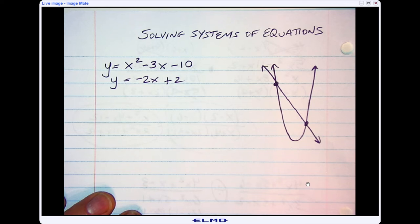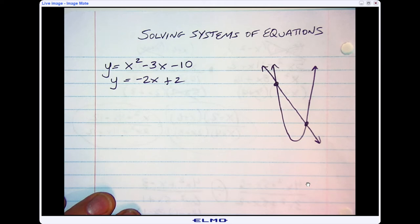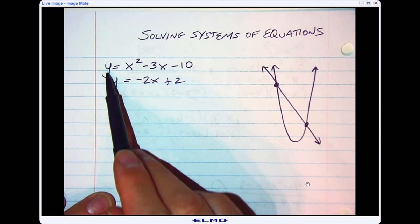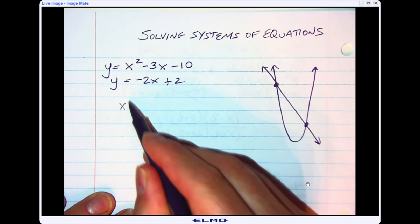We're going to use one of the methods we talked about earlier in solving systems, and that was the equal value method. So if this equation equals y and this equation equals y, we're just going to make these two function families equal each other.